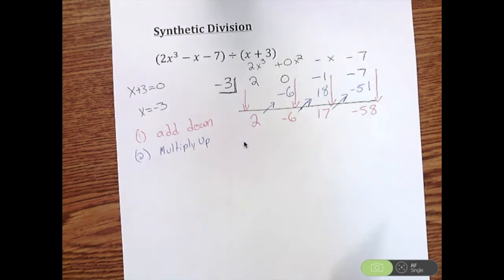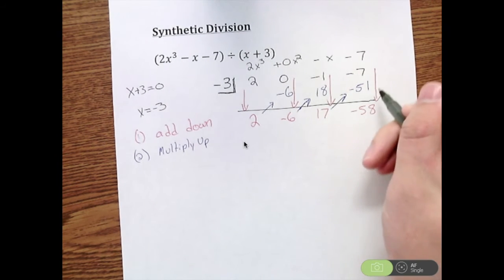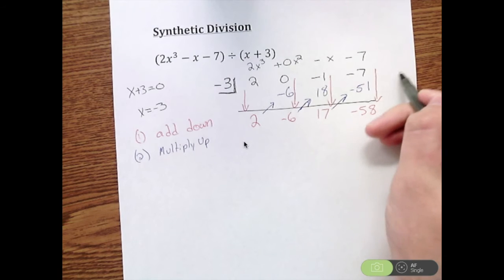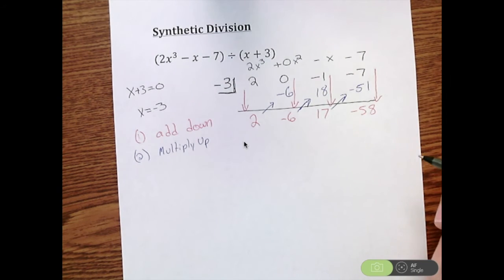Now you're probably looking at these numbers wondering what in the world does that all mean. Well, it's going to be pretty easy here. The final number - and you know to stop once we run out of numbers, there's no more numbers after this negative 7, so that's how we know we're done.